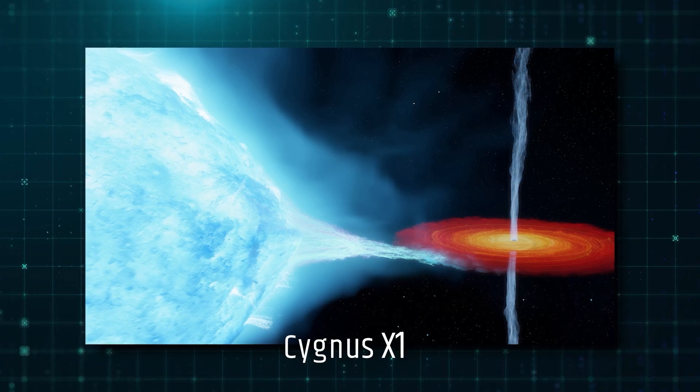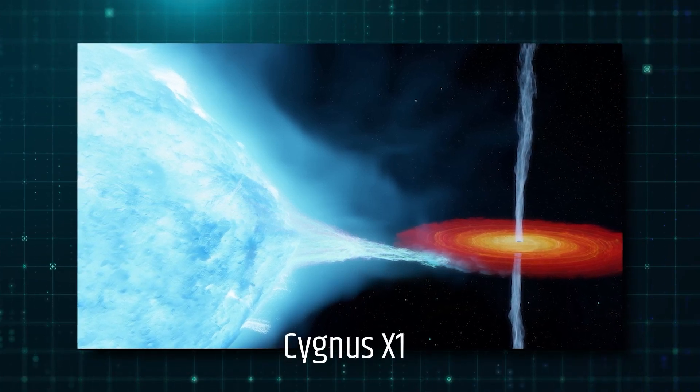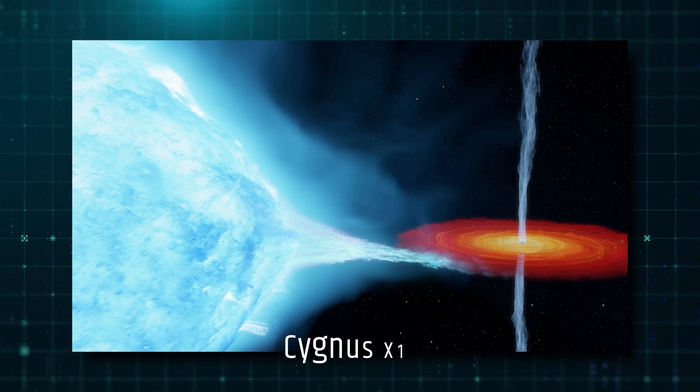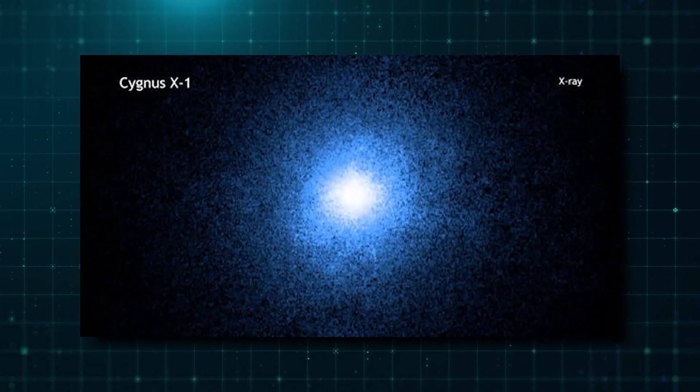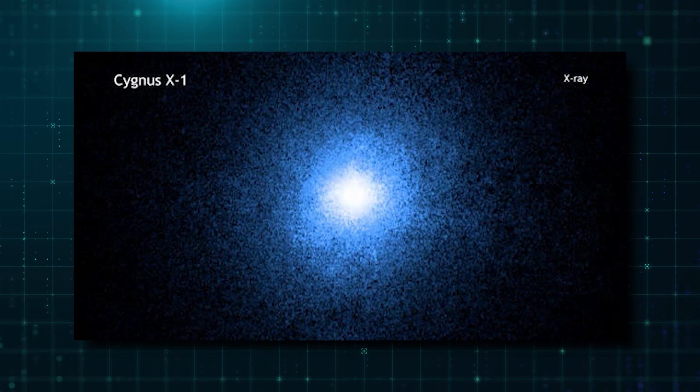We know this object as Cygnus X-1 and is recognized as the first black hole to have been discovered. This finding demonstrated that black holes can be identified even though they are invisible.